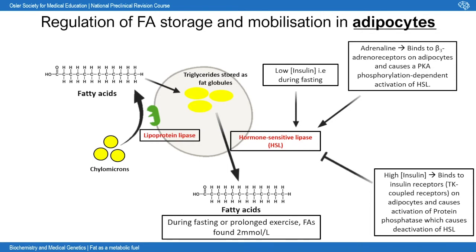HSL can be regulated by a variety of hormones. Insulin, at high levels, deactivates HSL through dephosphorylation via protein phosphatase — insulin binds tyrosine kinase receptors on adipocytes, and the downstream effect is activation of protein phosphatase which deactivates HSL. During starvation states with low insulin, there is increased activation of HSL because the phosphatase-mediated repression is reduced.